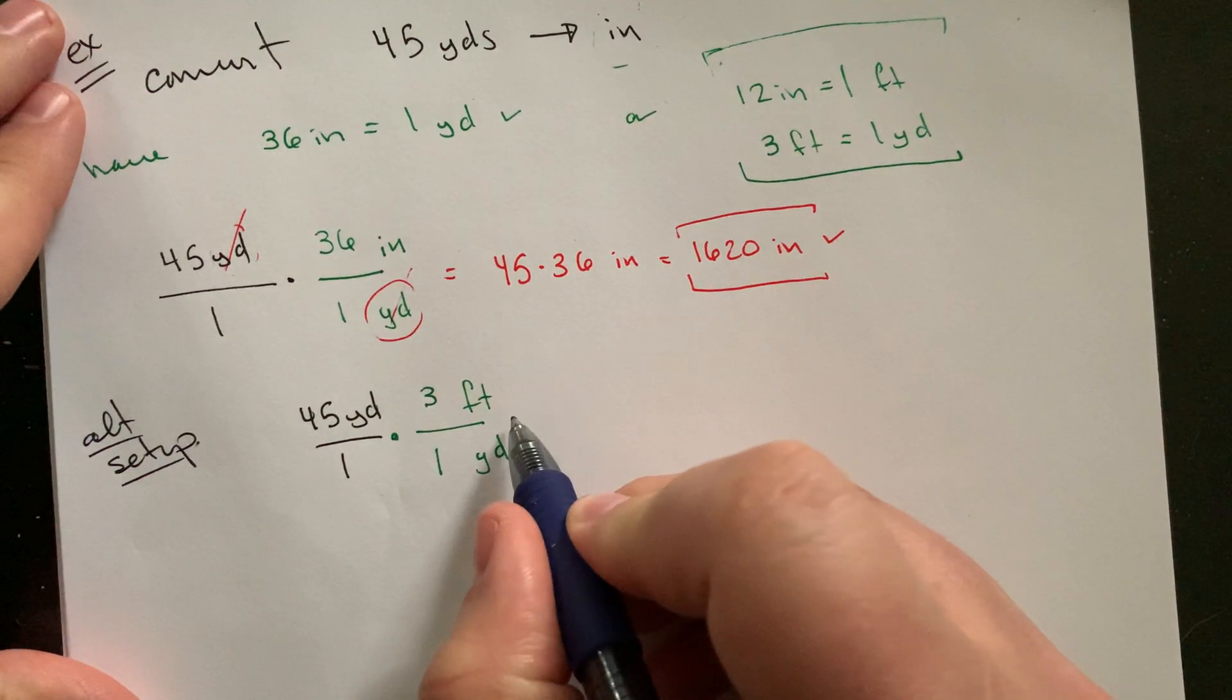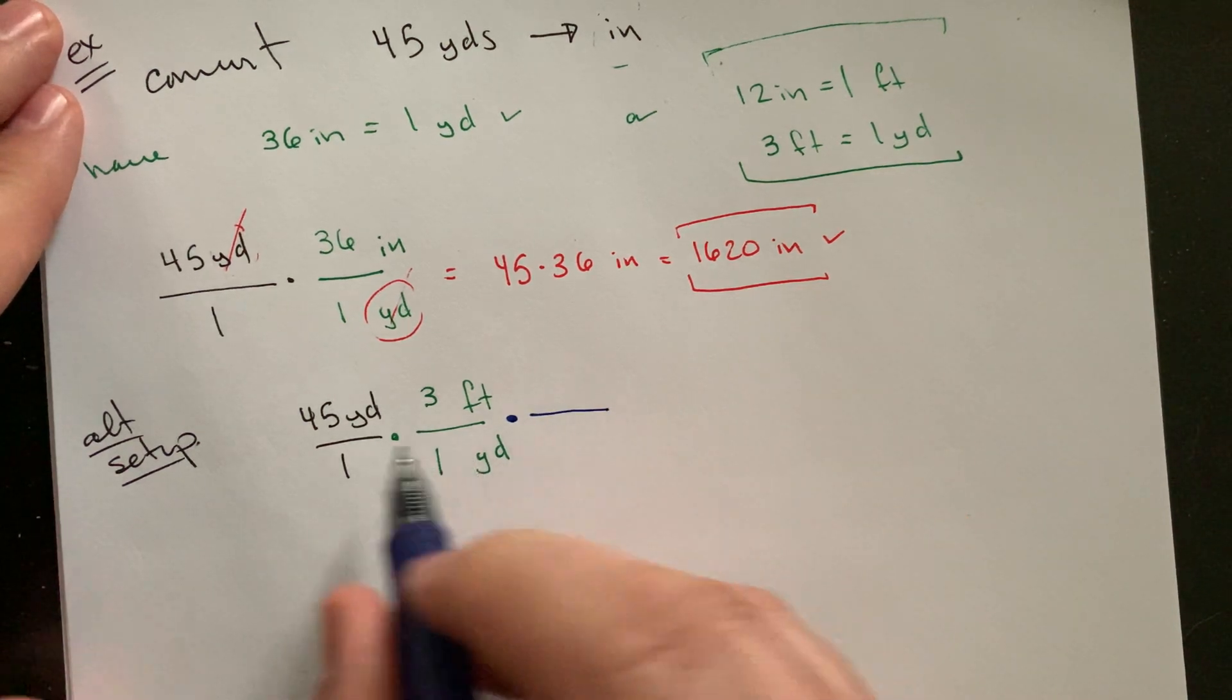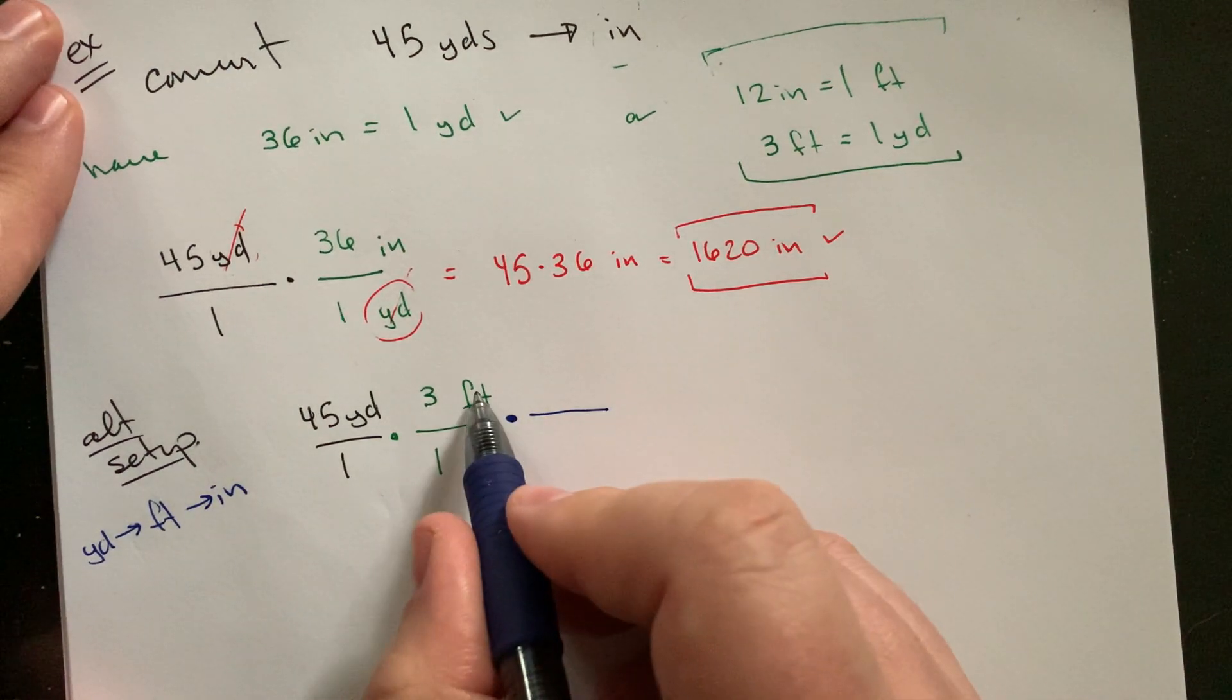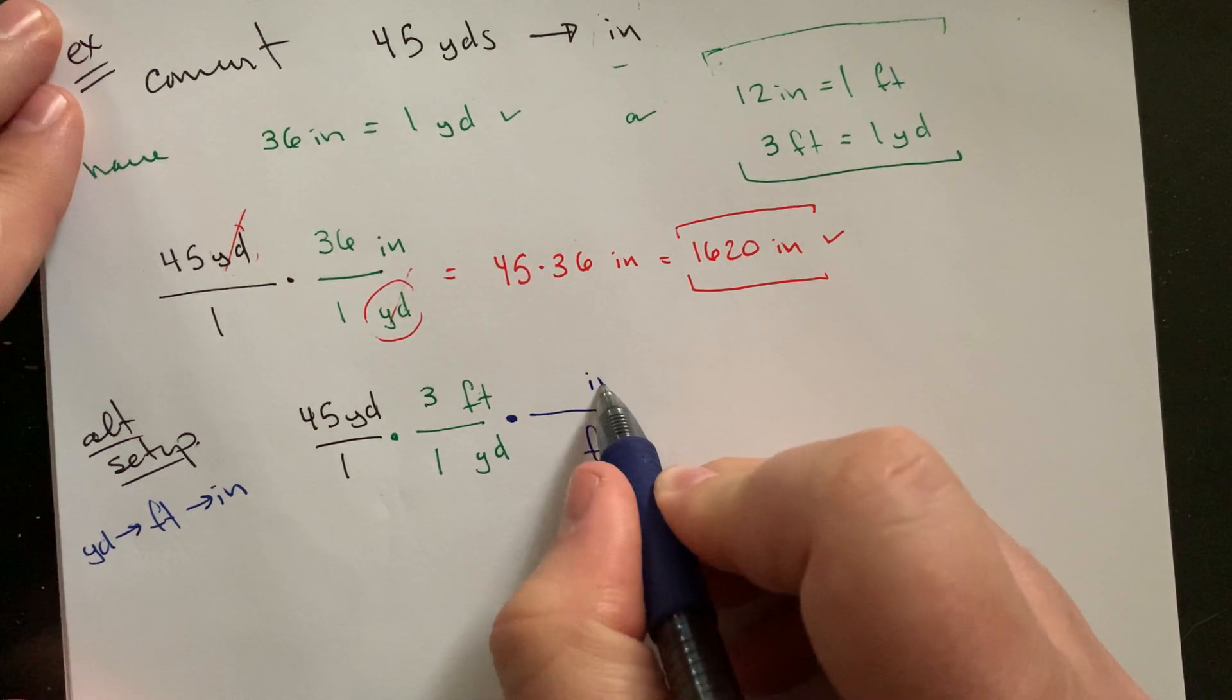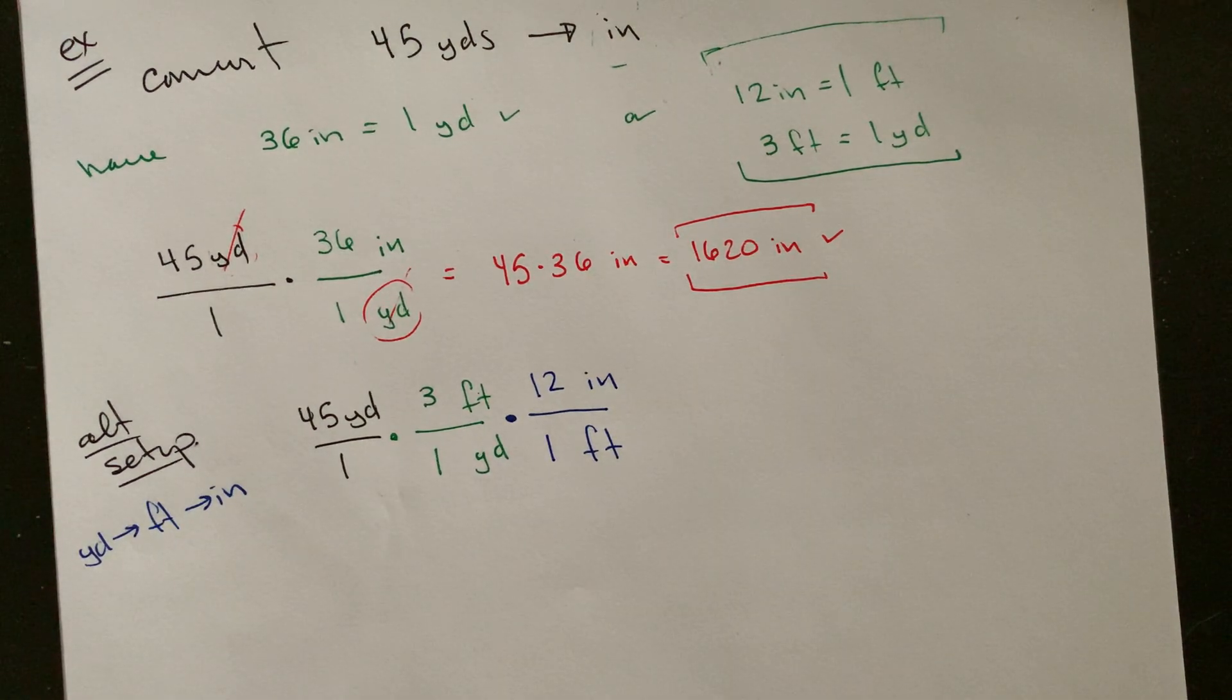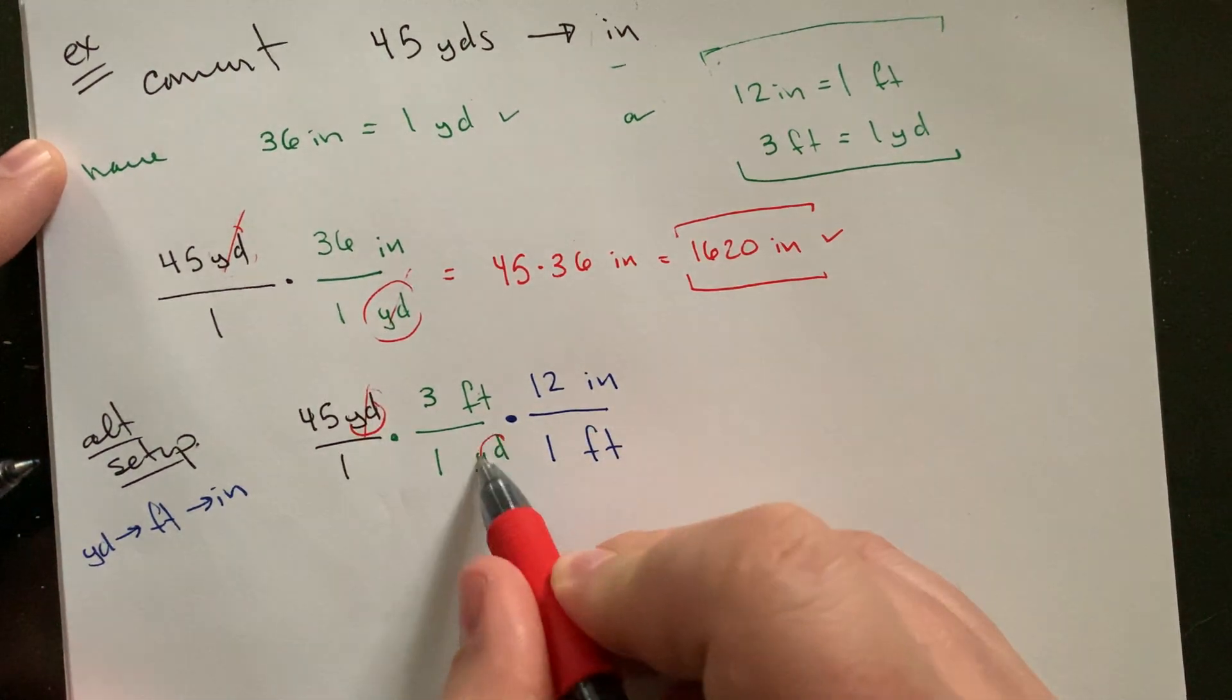And then what you would do is sort of a step two, is you need to get from feet to inches. So this would be yards to feet to inches. And so now you'd say, so feet is here, I got to match it, and I want to end up in inches. 12 inches for every one foot. I don't know that that's any better or any worse, it just is different. It kind of breaks up what we're doing a little bit here.